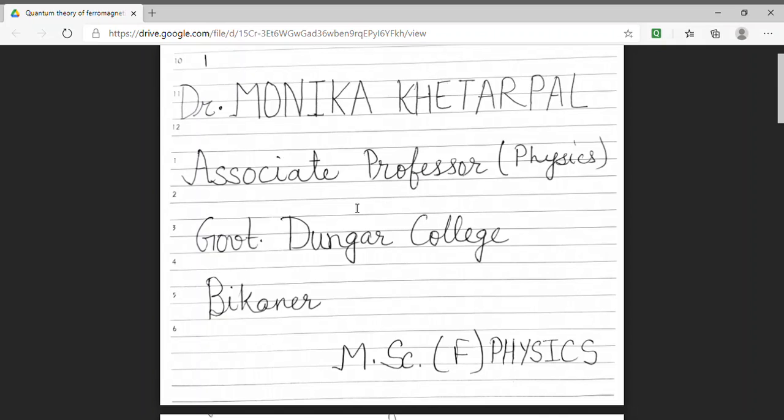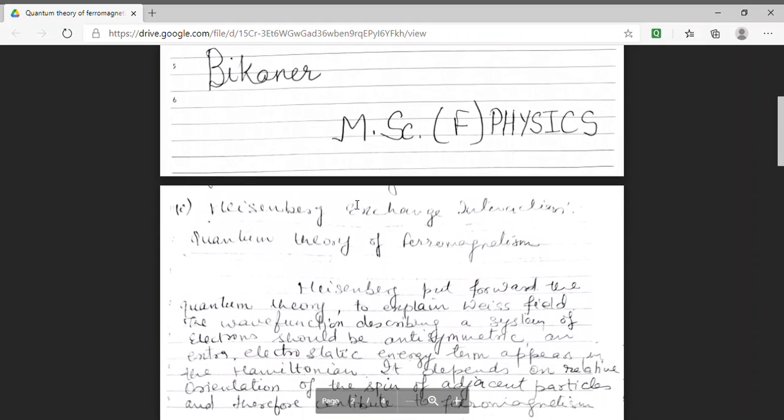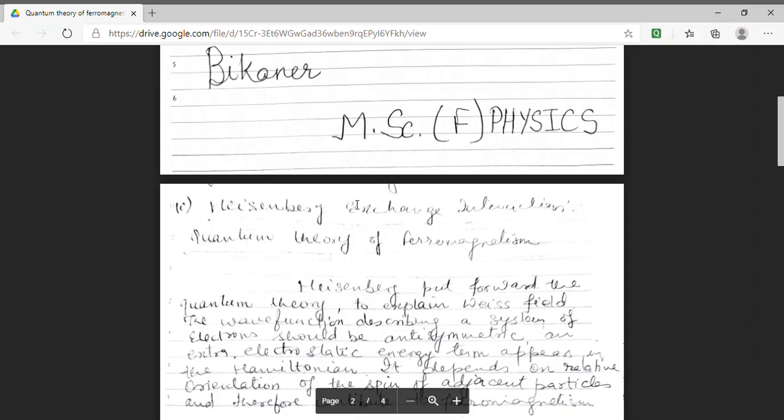We were dealing with ferromagnetism. Students, we know that in a material ferromagnetic property arises when temperature is less than a critical temperature which is known as Curie temperature. We have also shown by graphical method that this ferromagnetism arises because of spin motion and orbital motion has no contribution in it.